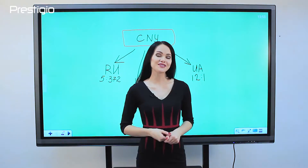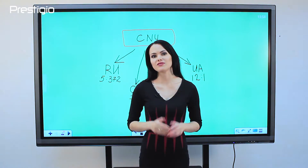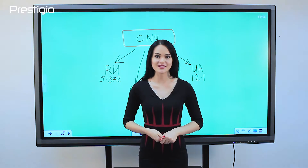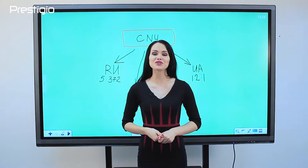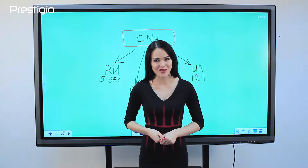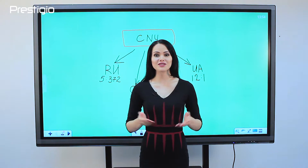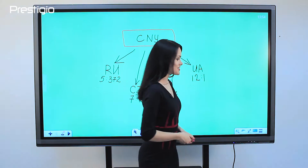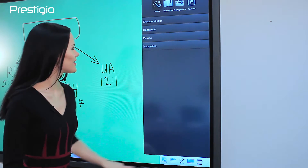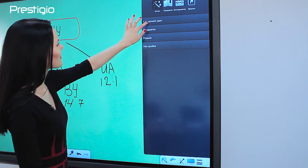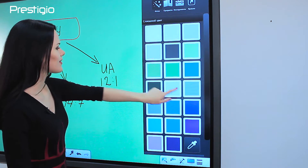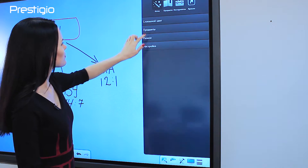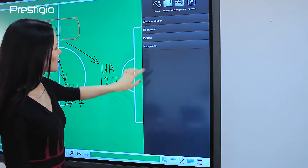We won't dwell on other working features. Download the app from the Prestigio website and try it yourself — there is a trial edition for one month. You can choose different backgrounds for your presentation with the option to set a branded background with logo.